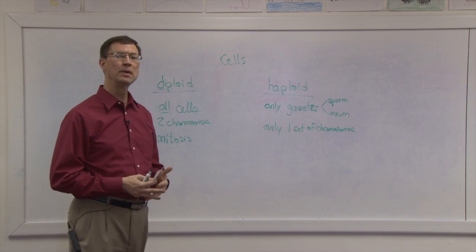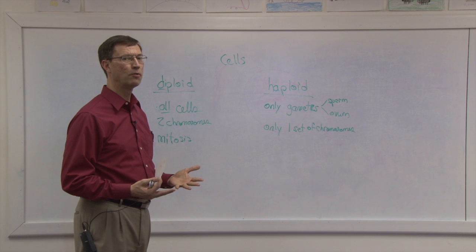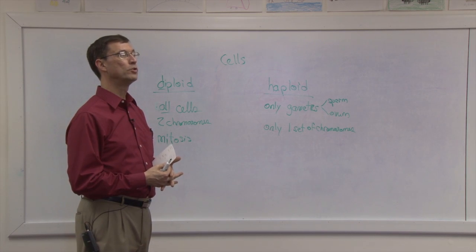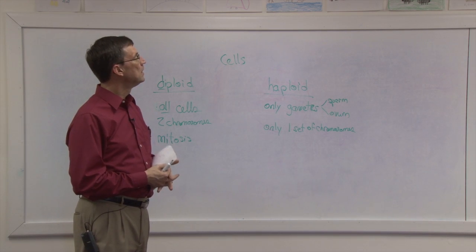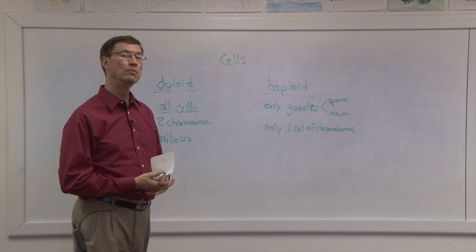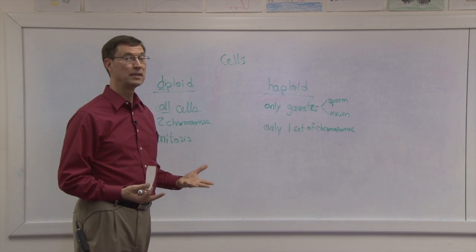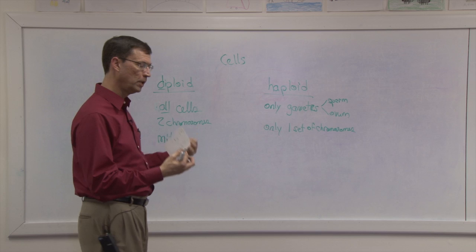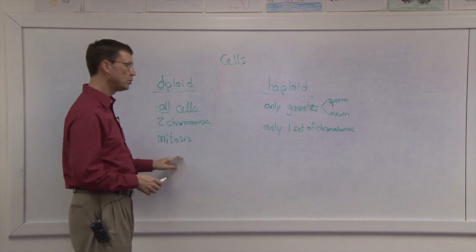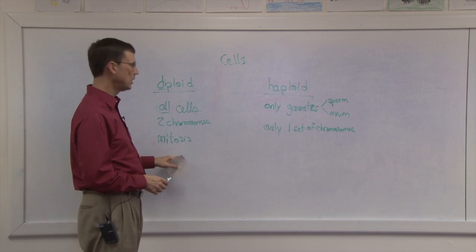The genetic material makes a duplicate copy of itself so that there are, for just a very brief time, instead of 46 chromosomes, actually double that, 92 chromosomes. And then the cell splits apart and forms two identical cells.